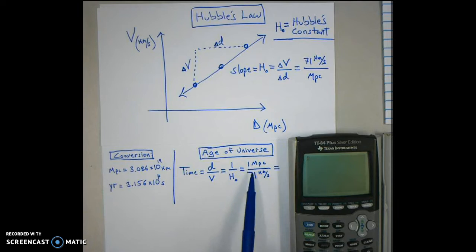In this case, that would be 1 megaparsec divided by 71 kilometers per second. If we convert the units, we can get the time in units of years. So the trick will be to convert those units. Here are the conversions.